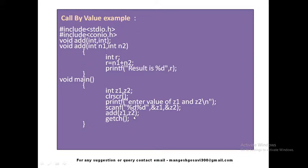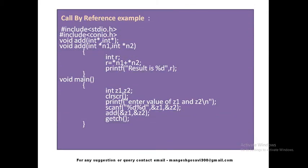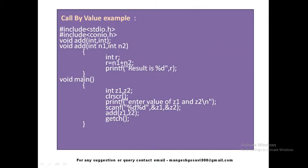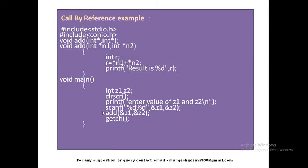Now we will discuss the same example for call by reference with a few changes. Call by reference means the function is called by passing the address of the variable. Again, the program starts at main, defining the same variables and taking values of z1 and z2 from the user. Observe this line — in call by value we wrote 'add(z1, z2)' directly, but in call by reference we write 'add(&z1, &z2)'. The '&' symbol is used to refer to the address.